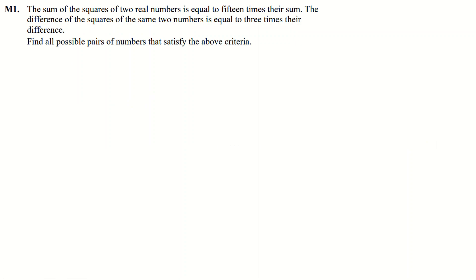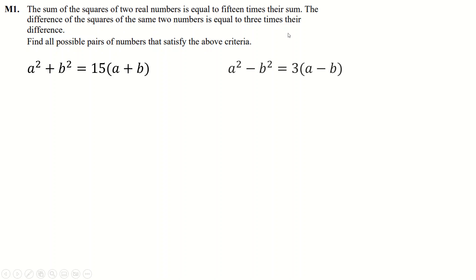The sum of squares of two real numbers: a squared plus b squared equals 15 times their sum, which is 15 times (a plus b). The difference between the squares, (a minus b) squared, is the same as three times their difference, so three times (a minus b).